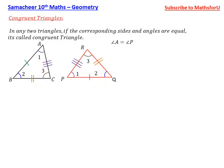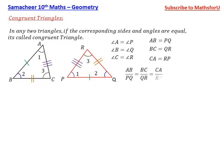This is the congruent triangle. Angle A is equal to angle P, angle B is equal to angle Q, angle C is equal to angle R. That's why AB equals PQ, BC equals QR, and CA equals RP. So AB/PQ equals BC/QR equals CA/RP equals 1.